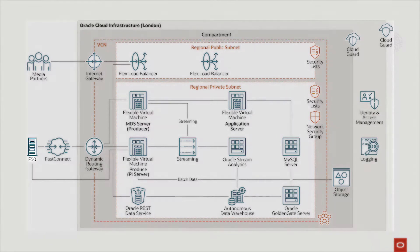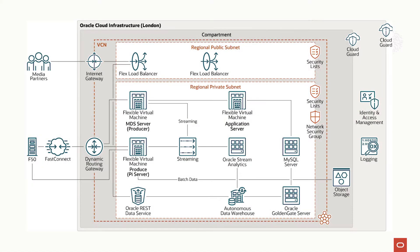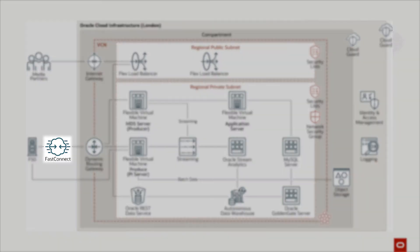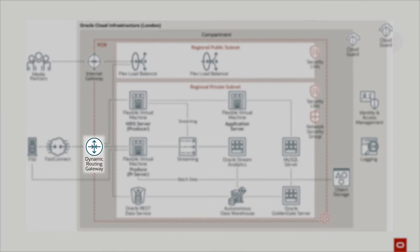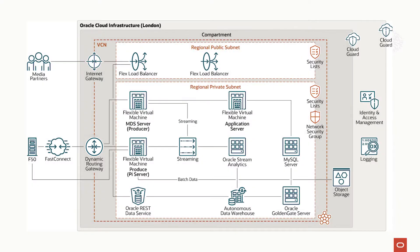Walk us through the key parts of your architecture and what each of those pieces are doing. Starting from the F-50 on the left-hand side, it connects to OCI using a one gigabit per second FastConnect. After that, using a dynamic routing gateway, or DRG, and a local VCN peering, the data is received by dedicated compute instances for pre-processing.